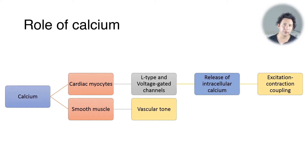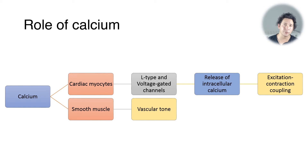So what's the role of calcium in muscle contraction? In cardiac myocytes, calcium enters the cells through L-type calcium channels and also voltage-gated calcium channels, and that causes the release of more calcium from intracellular stores, allowing excitation-contraction coupling to take place.